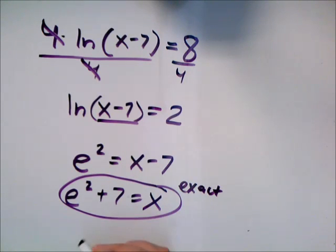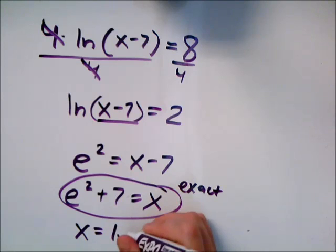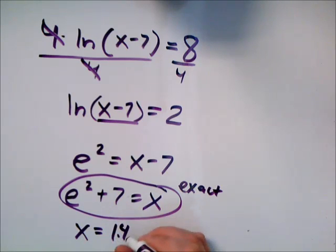But here they say round to the nearest hundredths, or they're okay with go to your calculator and see what e squared plus 7 actually is, and that gives us 14.39 when we round to the nearest hundredths.